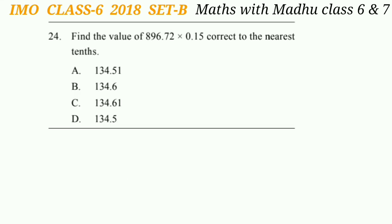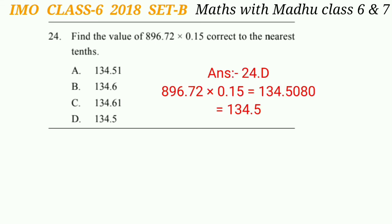Question 24: Find the value of 896.72 × 0.15, correct to the nearest tenths. Multiplying 896.72 by 0.15 gives 134.5080. Correct to the nearest tenths, this is 134.5. The answer is option D.